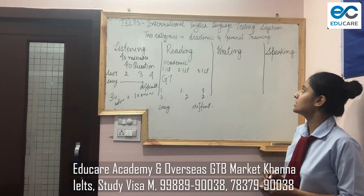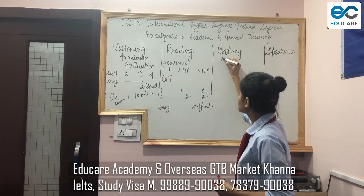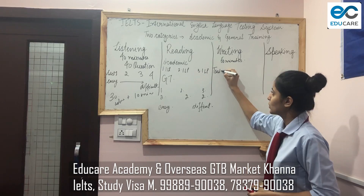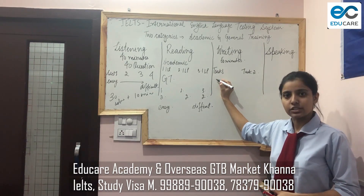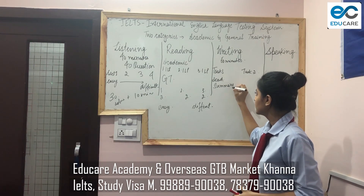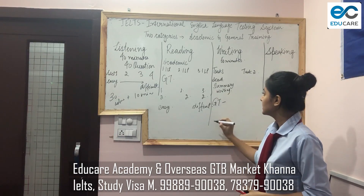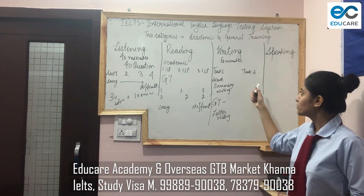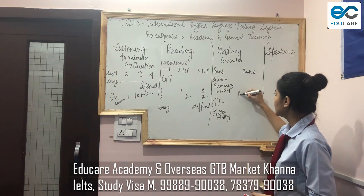Let's move to module 3, which is Writing. Writing is 60 minutes long and you will be provided with two tasks — Task 1 and Task 2. Task 1 differs for Academic and General Training students: for Academic students Task 1 is Summary Writing, whereas for GT students it is Letter Writing. Task 2 is the same for both — it is Essay Writing.